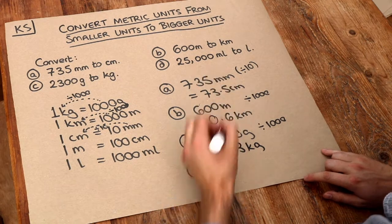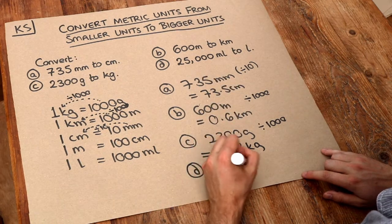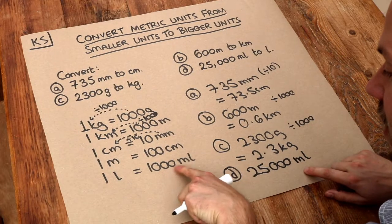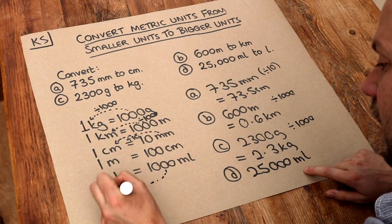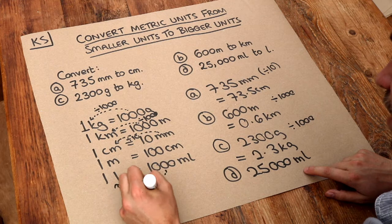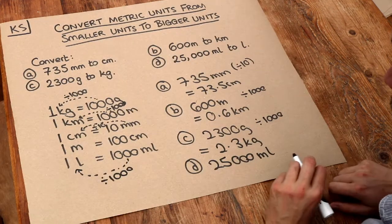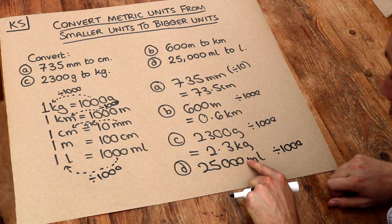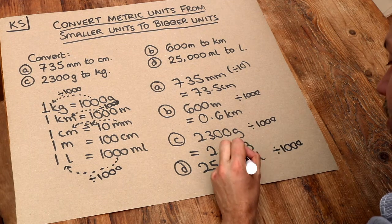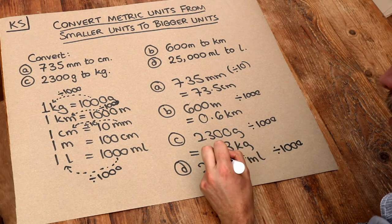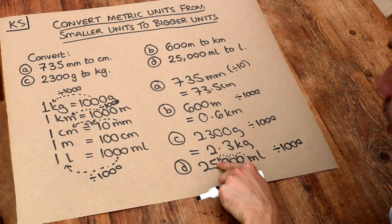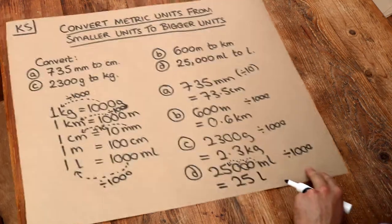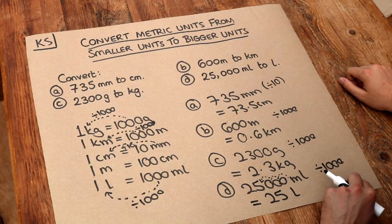Finally, 25,000 milliliters — we want to convert to liters. To get from milliliters to liters, we divide by a thousand. The decimal point is here; we move it three times to the left — one, two, three — and it's now 25.000, which is just 25 liters.